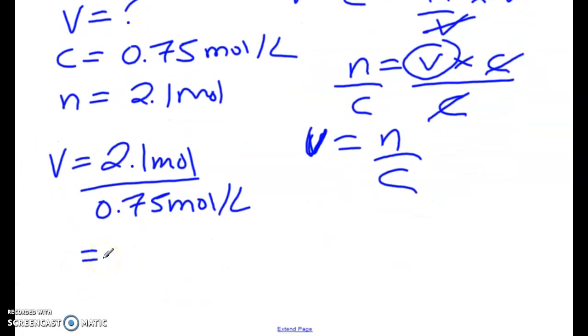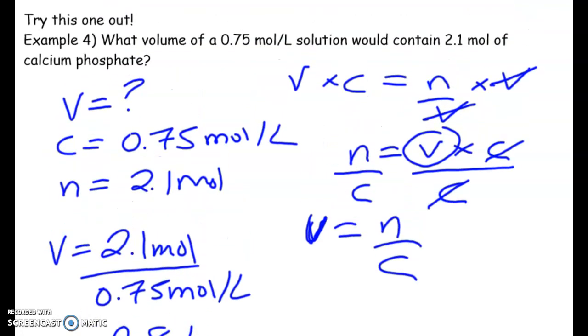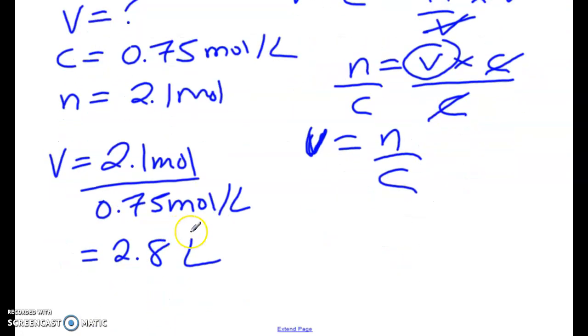So v is equal to 2.1 moles over 0.75 moles per liter. So we end up getting 2.8 liters. And that's already two sig figs. So that's our final answer there.